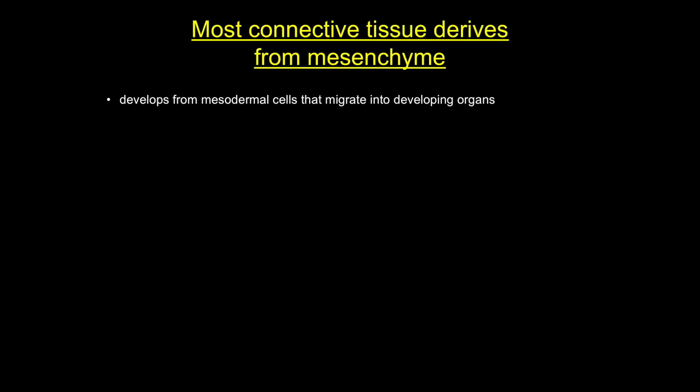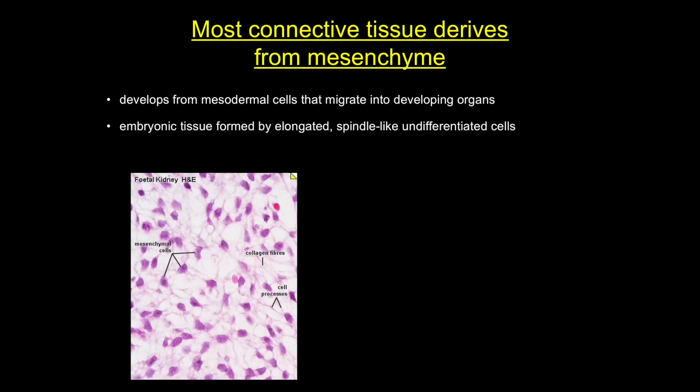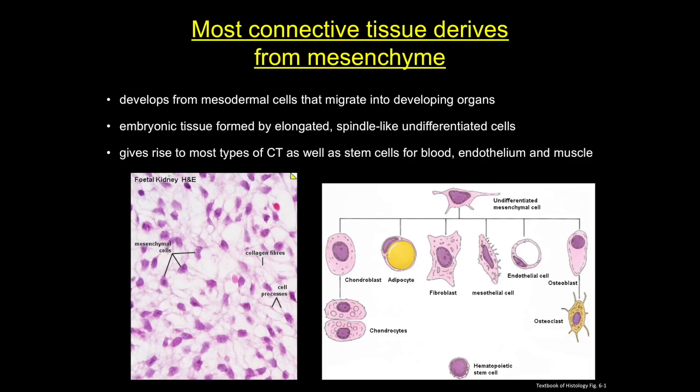There are several definitions for mesenchyme, but for our purposes we'll define it as consisting of a mostly viscous ground substance with a few collagen fibers and cells. Mesenchymal cells are largely undifferentiated. They have large nuclei and look sort of spindle-shaped. Importantly, they're multipotent and have the ability to migrate from their point of origin to surround and penetrate developing organ systems, and give rise to a number of different cell types.